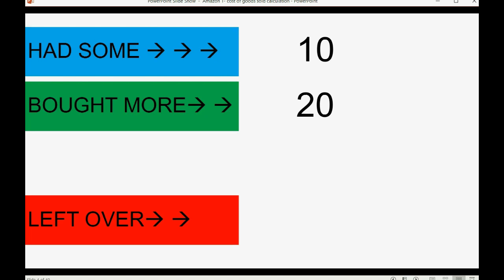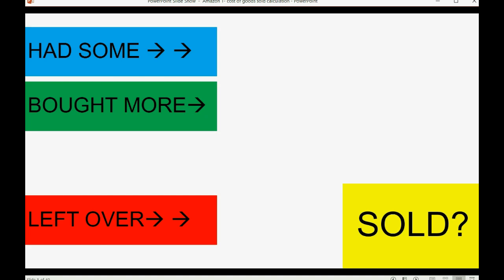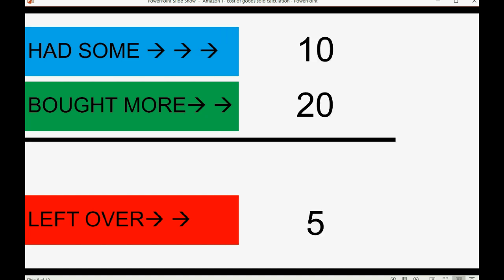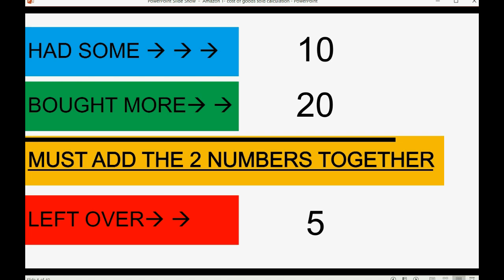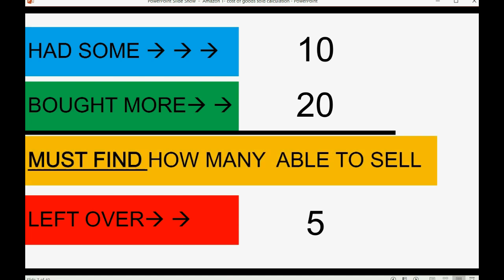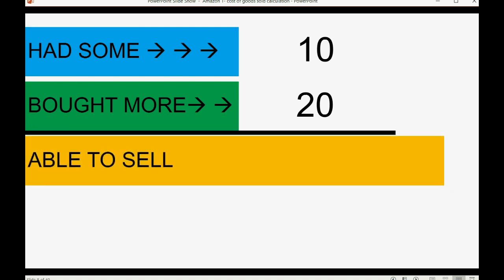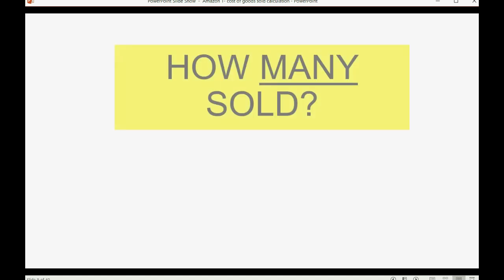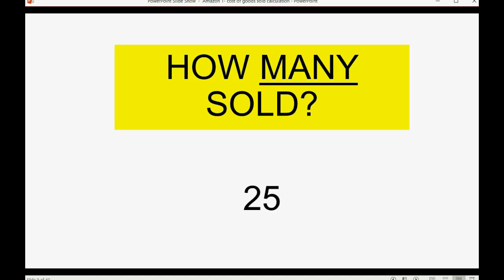...is physically count the ones that remain at the end of the month. If you count the amount at the end of the month and you have 5 items left over, how would you find out how many were actually sold? You would add the first two numbers together to find out how many you were able to sell, then subtract the amount left over. So if you were able to sell 30 and did not sell 5, then you actually sold 25.